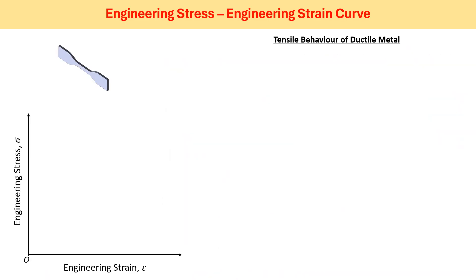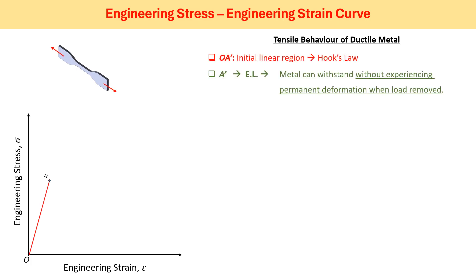Once we get the load versus displacement curve, we can convert it using the original dimensions of the specimen to the engineering stress and engineering strain curve. This flow curve first indicates that the material is deforming elastically, showing linear behavior, and it is elastically deforming up to the point known as A', which is known as the elastic limit.